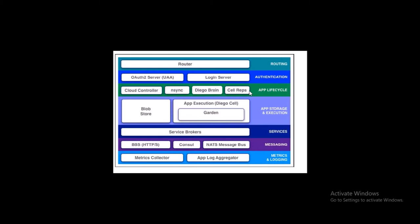Here's how these components work together. nsync receives a message from the Cloud Controller when a user scales up an application, then writes the number of instances required in the Diego database. For example, if a user scales from 3 to 5, nsync writes the value 5 in the desired column of the BBS database. PBS uses this information to monitor actual and desired LRPs, while Reps monitor the containers and provide actual LRP values.